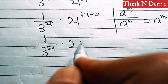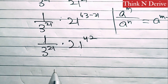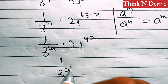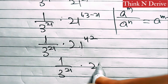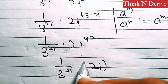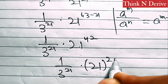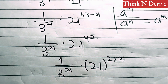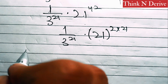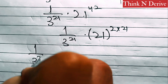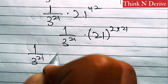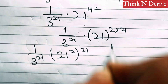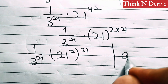So this is equal to 1 over 3 power 21, times 21 power 42. We can rewrite 42 as 2 times 21, giving us 1 over 3 power 21, times 21 power (2 times 21).